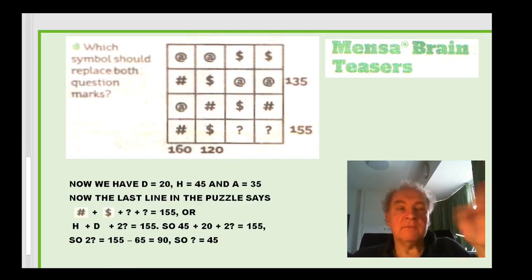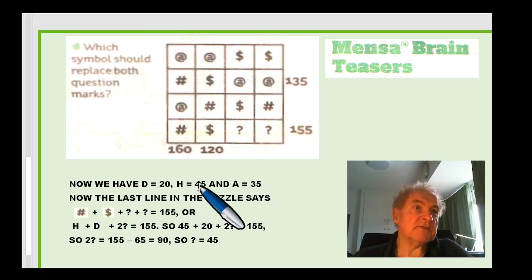So I'll just summarize what we've got already. We've got d equals 20, h equals 45, and a equals 35. Now the last line in the puzzle says that a hash plus a dollar plus a question mark plus a question mark equals 155, or h plus d plus two question marks equals 155. So if I add the 45 plus the 20 together, it's 65. So I've got 155 minus 65, which is 90, so the question mark must be 45.